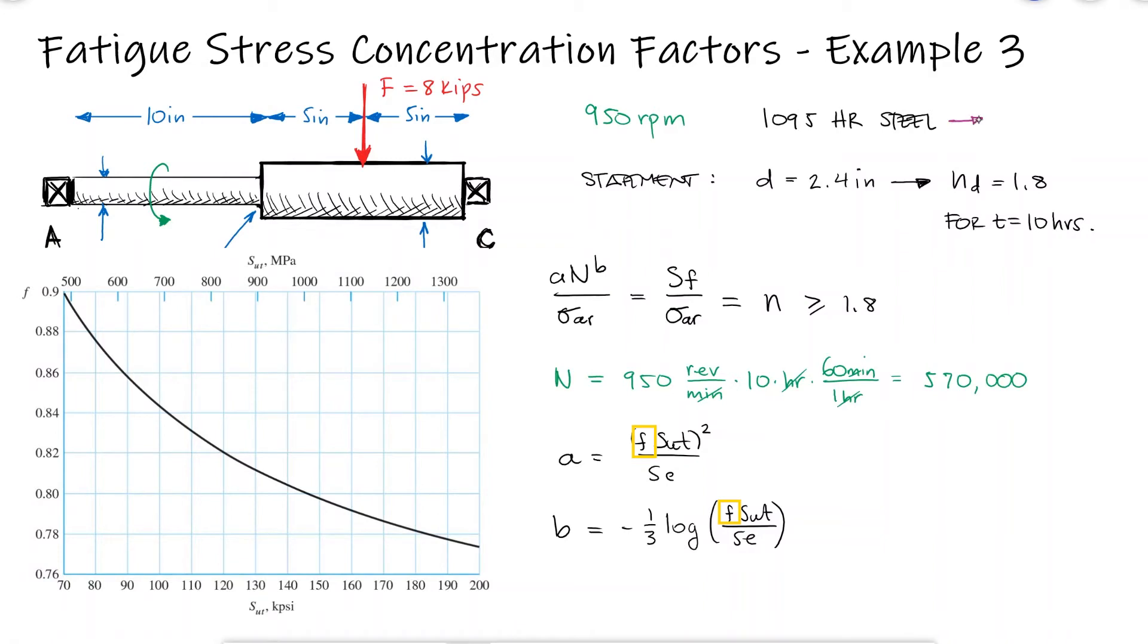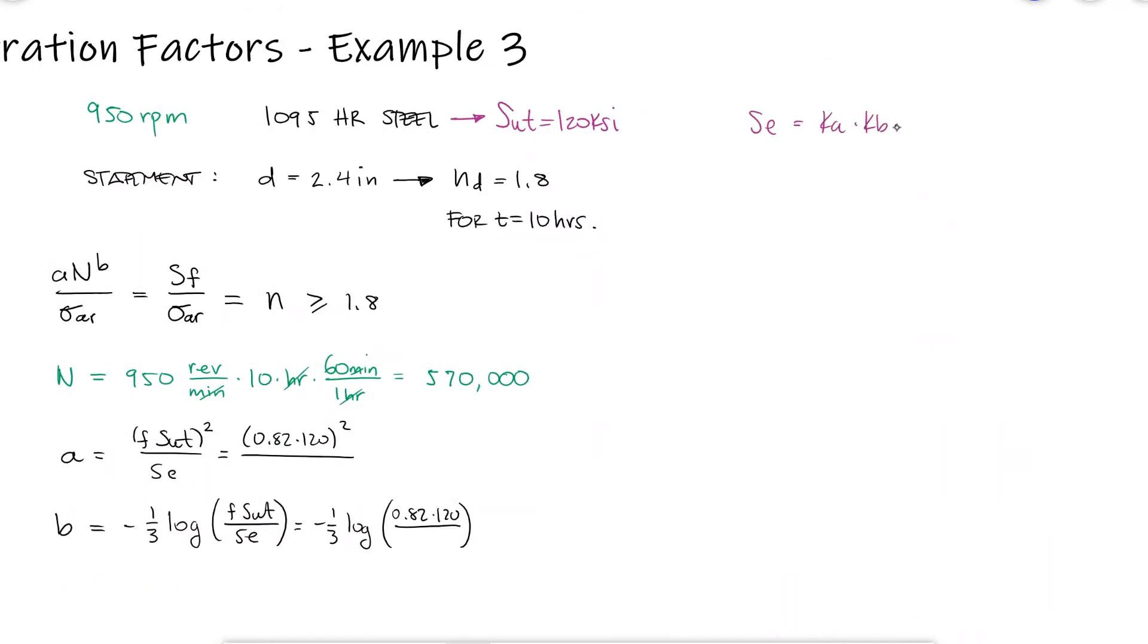The f coefficient for a 120 ksi ultimate strength is 0.82. The endurance limit will be the product of the marine factors that apply times the rough estimate as Se prime. With the endurance limit,